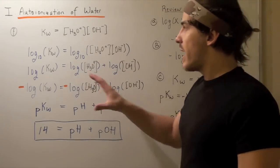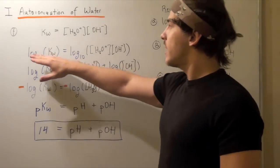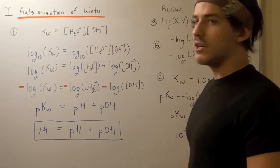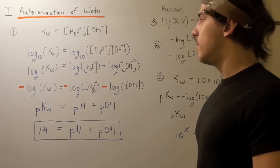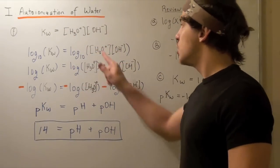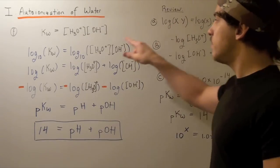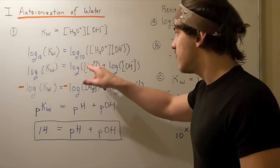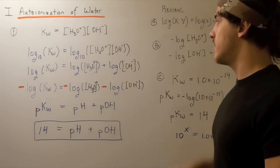Let's go back to here. Kw is equal to hydronium times hydroxide. Log of base 10 of Kw is equal to log of base 10 of this entire guy. Using part A, we simply distribute, and we get log of Kw is equal to log of this guy plus log of this guy.